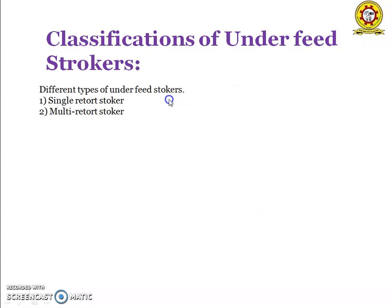The classifications of under feed stokers: under feed stokers are broadly classified into two types — single retort stoker and multi-retort stoker. The single retort stoker consists of a trough-shaped retort to which the fuel is fed by a reciprocating ram or screw conveyor. The capacity of this stoker ranges from 100 to 2000 kg of coal burned per hour. The second one is the multi-retort stoker. The coal falling from the hopper is pushed forward during the inward stroke of the stoker.